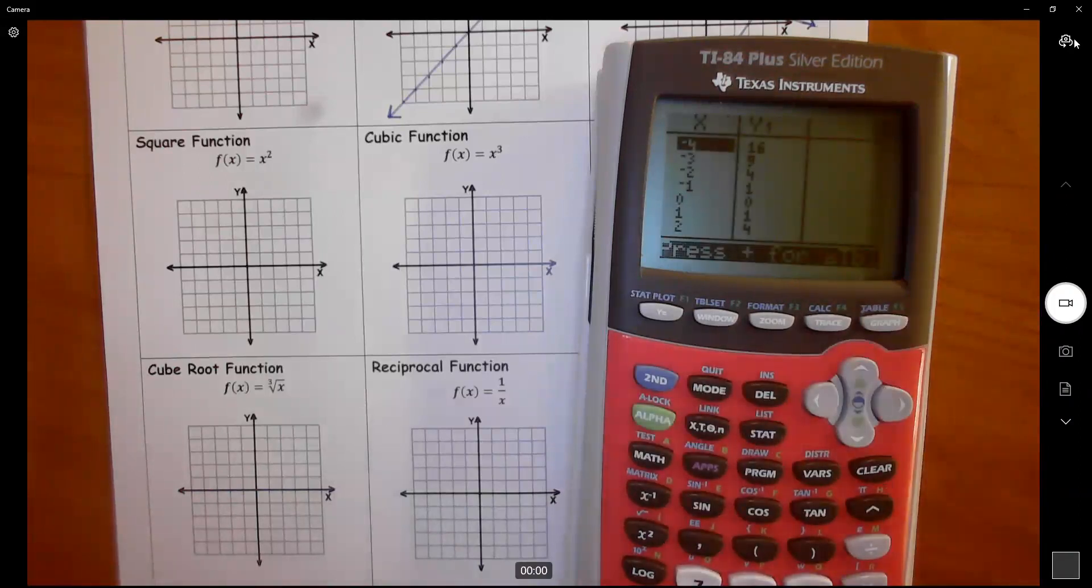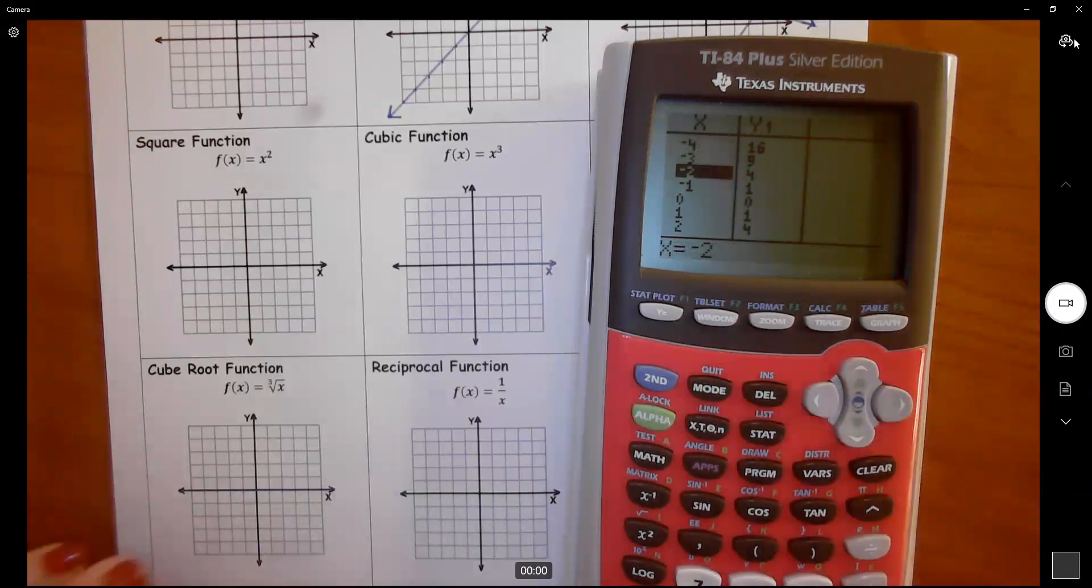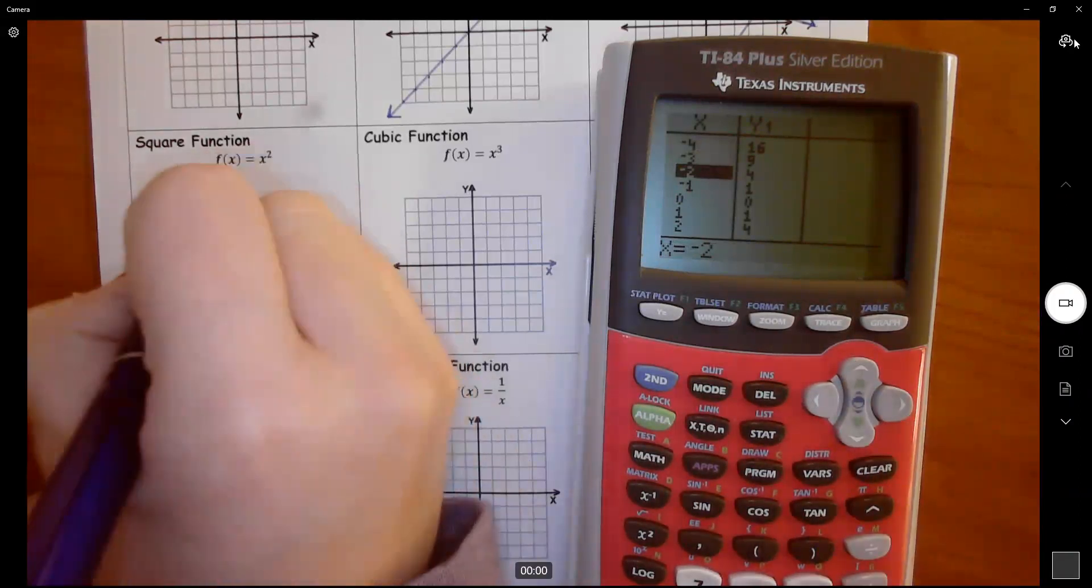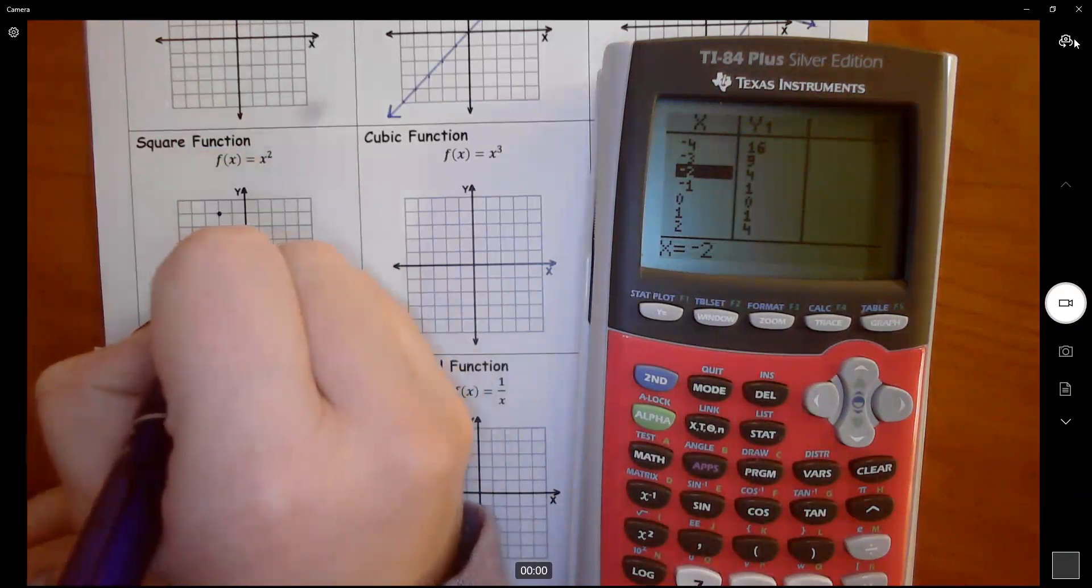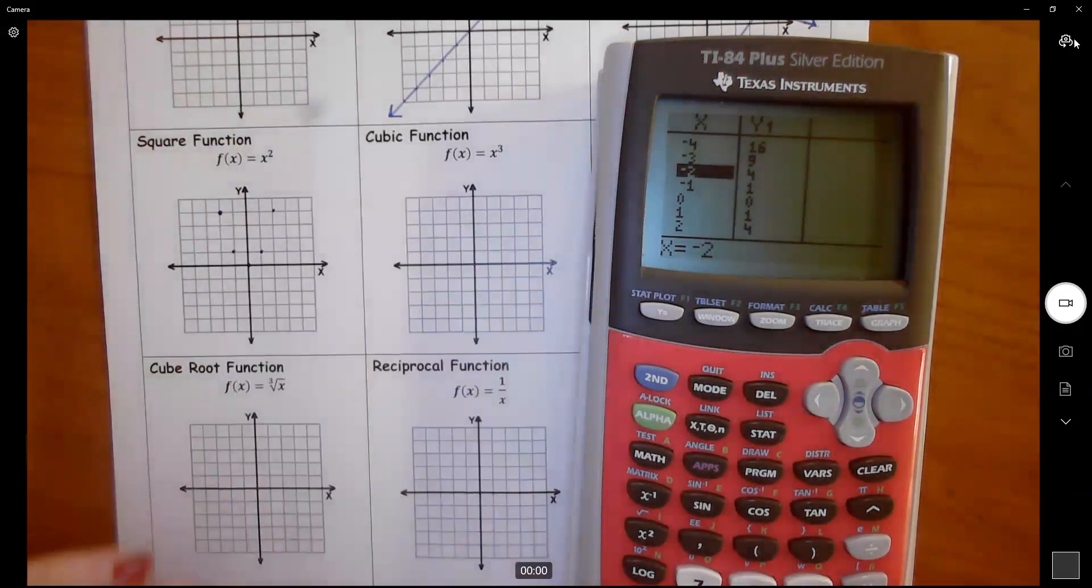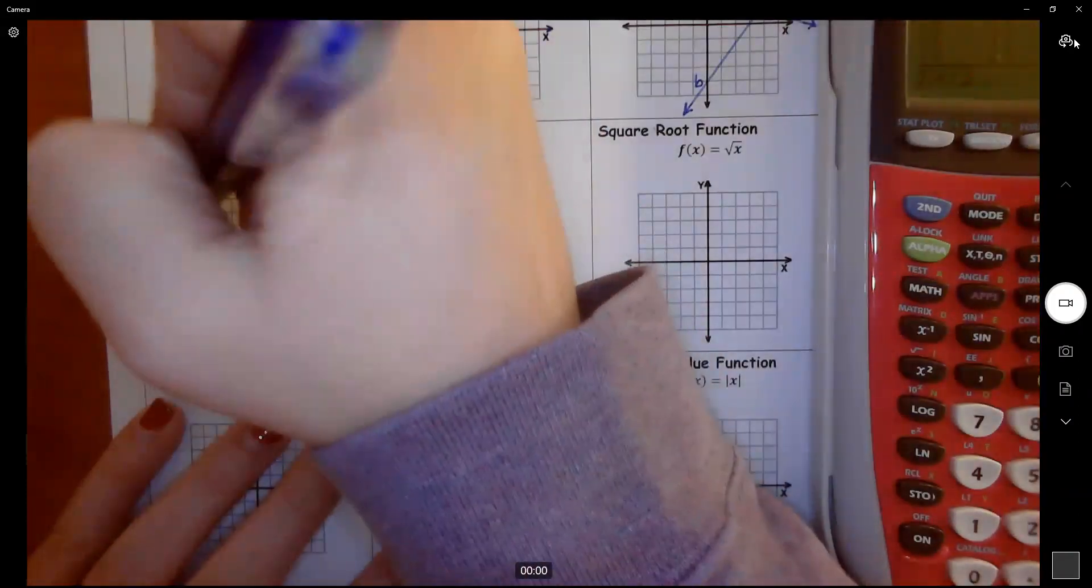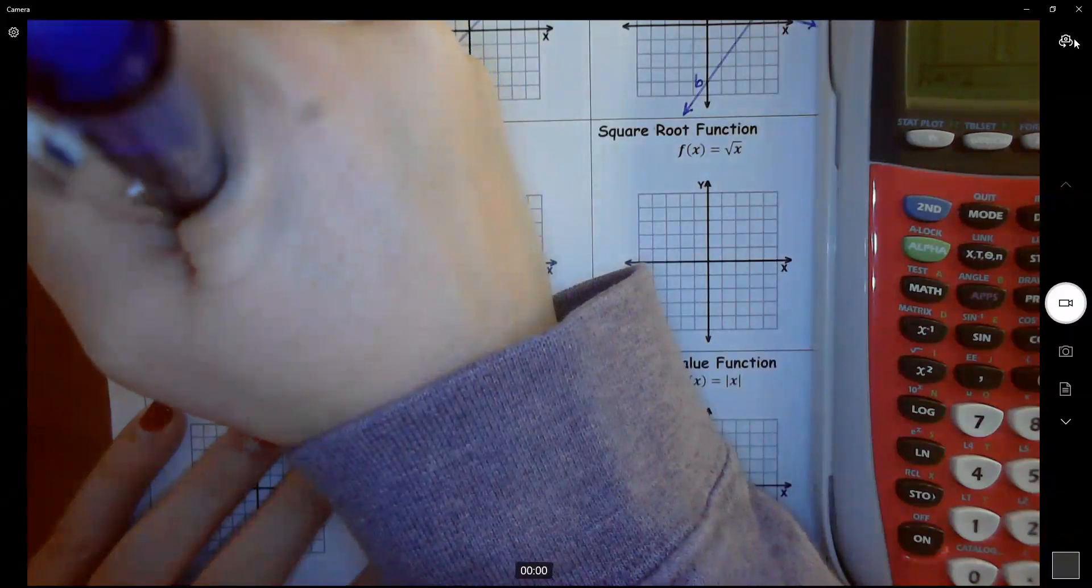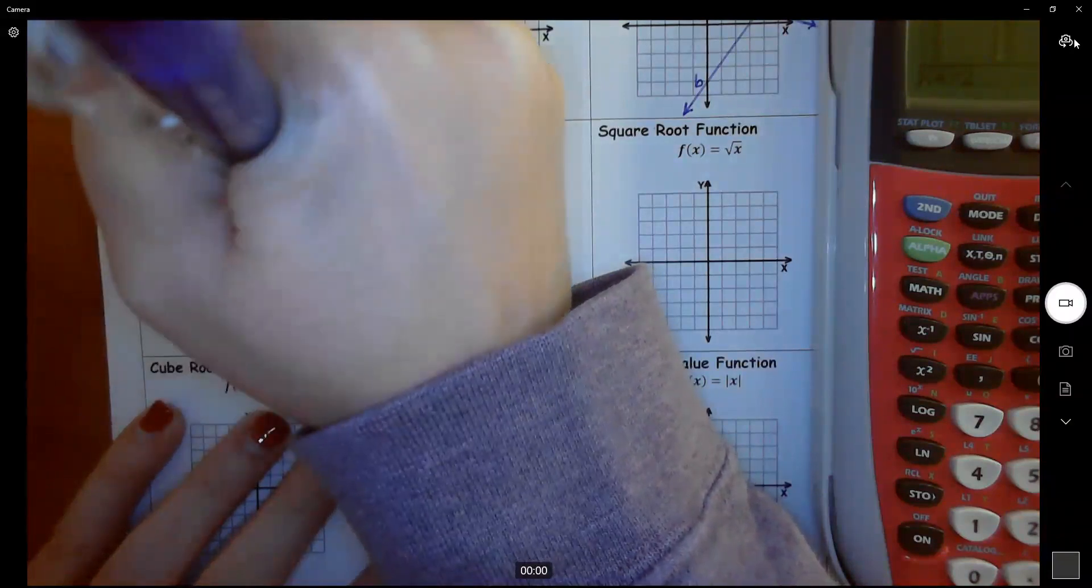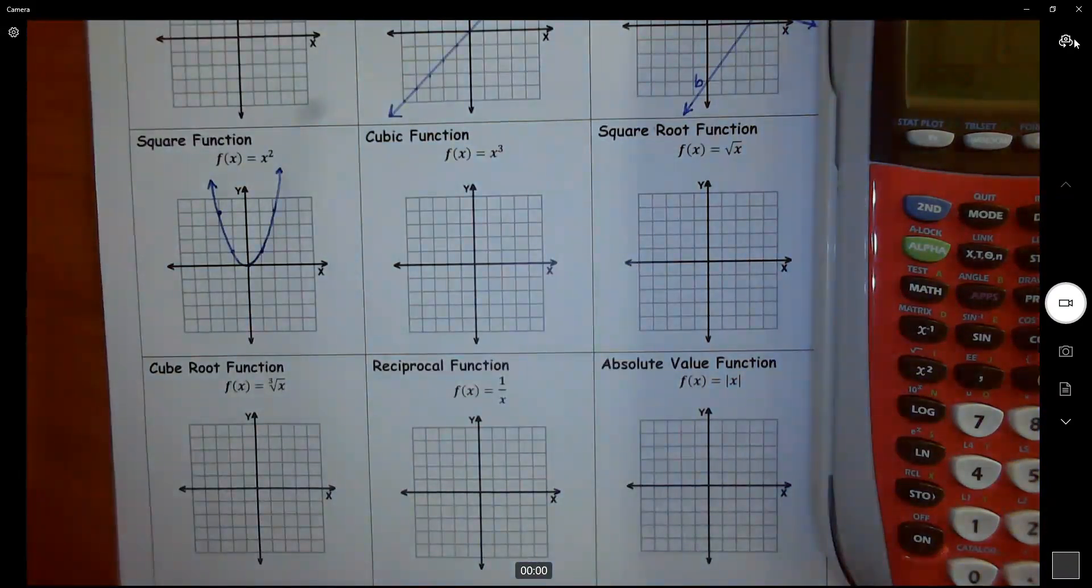So I hit second table. Here's some of my numbers. I can't fit a lot of these on here, but I can do negative 2, 4, 1, 1, 0, 0, 1, 1, and 2 positive 4. So then just kind of make this as precise as you can. There's my parabola.